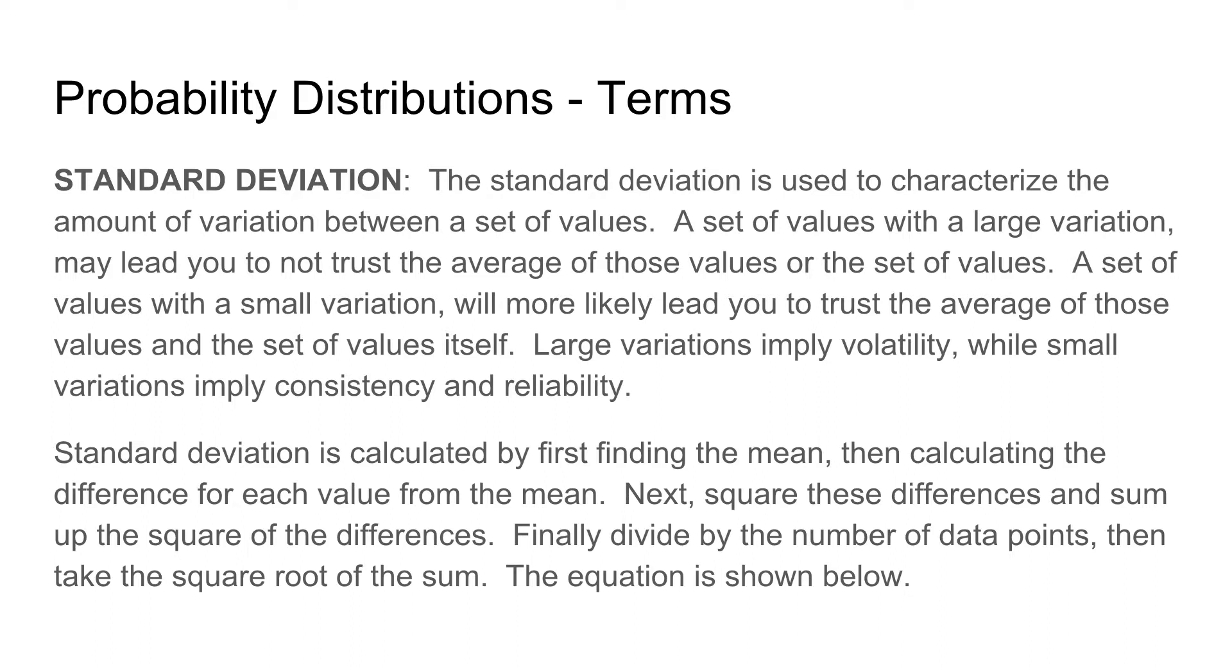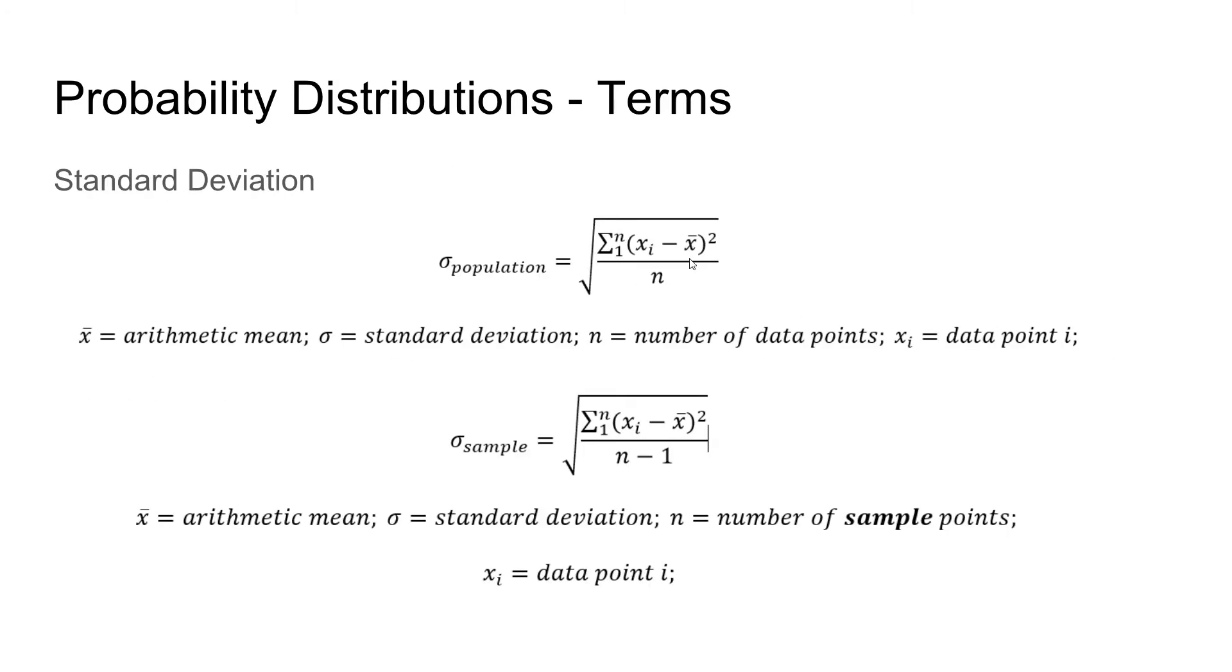In order to calculate standard deviation, you must first calculate the mean, then calculate the difference for each value from the mean, then take the square of these differences and sum up the square of them, and finally divide by the number of data points and then take the square root of the sum. The equation is shown here. We have the difference between the individual data point and the mean, and we take the square of those values and sum them up, divide by the total number of data points, and take the square root.